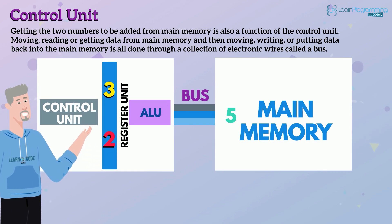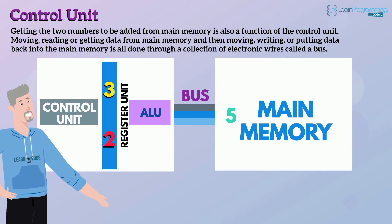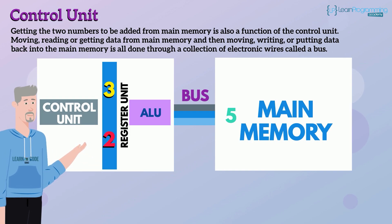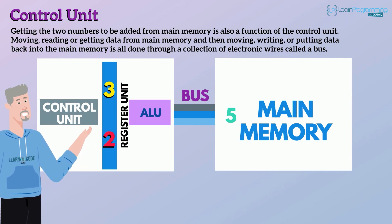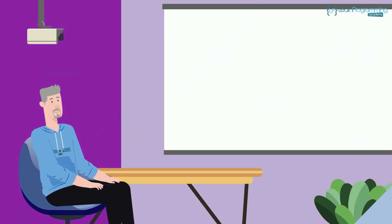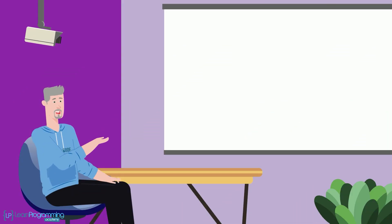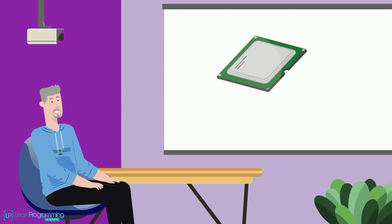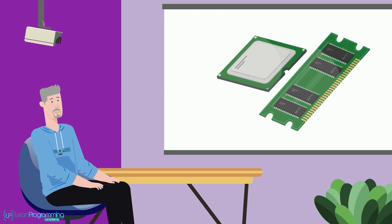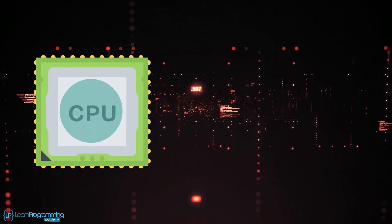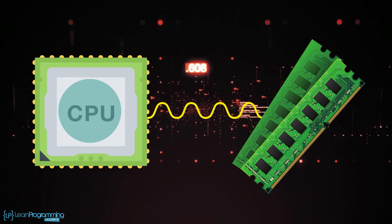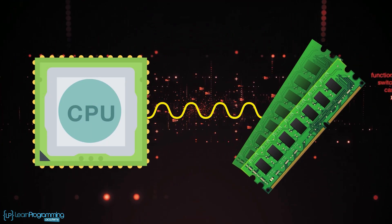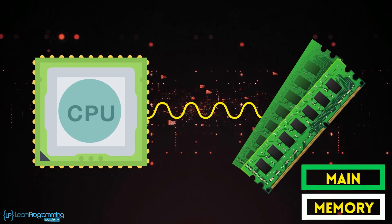The control unit is certainly an amazing component of the CPU as it coordinates everything that takes place within the CPU. It's difficult to talk about the CPU without including a more detailed discussion about memory. A typical CPU cycle includes interaction with memory, sometimes referred to as main memory.